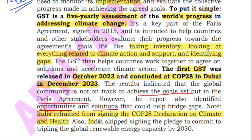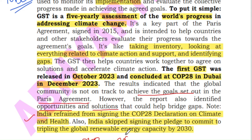India also skipped signing the pledge to commit to tripling the global renewable energy capacity by 2030. So these two things — one, the declaration on climate and health, and two, the pledge to increase global renewable energy capacity three times by 2030 — are the two things India has not signed.